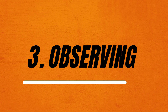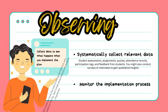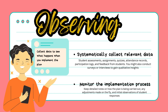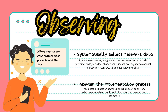Step 3: Observing — systematically collect relevant data to evaluate the impact of the intervention. This could include student assessments, assignments, quizzes, attendance records, participation logs, and feedback from students. You might also conduct surveys or interviews to gain qualitative insights. Keep detailed notes on how the plan is being carried out, any adjustments made on the fly, and initial observations of student responses.